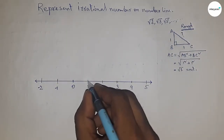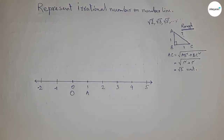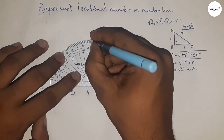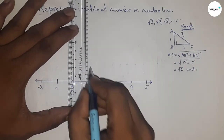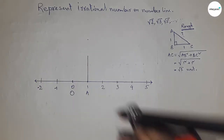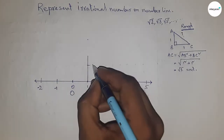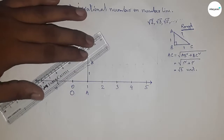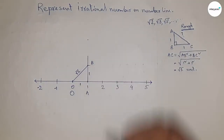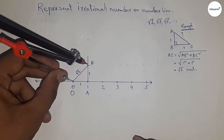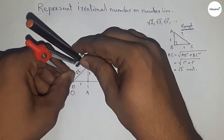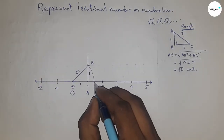Now applying this concept between 0 and 1, since 0 to 1 is one unit length. First, draw a 90 degree angle at point 1 using a protractor. Then take a length equal to one unit and mark point B. Join O and B — this side is 1 and this side is 1 unit — so OB is root 2 units. Now take the length OB with a compass to draw an arc which meets the number line at point B. This is the representation of root 2 on the number line.